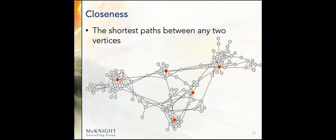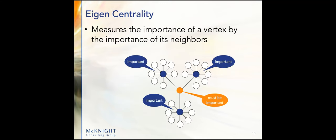Eigencentrality measures the importance of a vertex by the importance of its neighbors. Different ways to skin the cat in terms of finding out who the important vertices are that we need to act upon. Say we need to get some PR out — which news outlet do we go to? Which one will get the word out the best? It's probably the one connected to the ones that are connected to the most important and most numerous vertices out there.